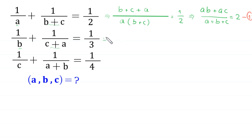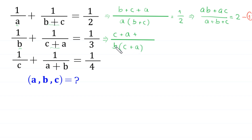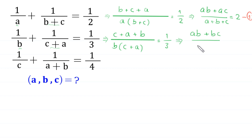From the second equation, we take the LCM of b and (c+a). The LCM is b(c+a). This LCM divided by b gives (c+a), and divided by (c+a) gives b. So (c+a)·1 + b·1 = 1/3. Taking the reciprocal on both sides: (ab + bc) / (a+b+c) = 3. Let us call this Equation 2.